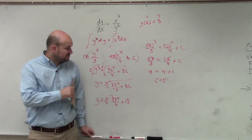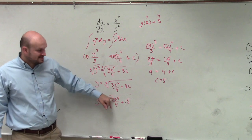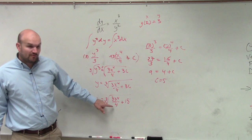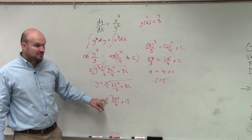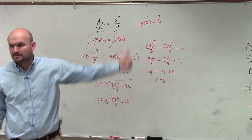And again, we can double check to make sure this works. Plug in your 2 and your 3. So y equals 3 when x equals 2. So 2 to the fourth power is 16, divided by 4 is 4, 4 times 3 is 12, 12 plus 15 is 27. Cube root of 27 is 3, which your y is equal. So that works out. OK?